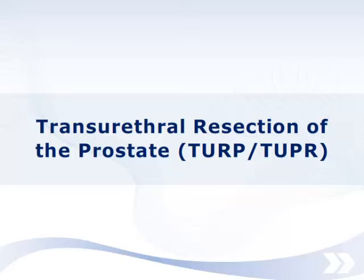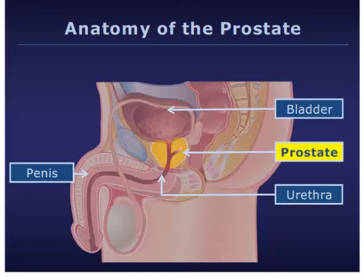Thank you for viewing this educational presentation. This module discusses an operation for the prostate called transurethral resection of the prostate, or TURP. The prostate is a small gland situated at the bottom of the urinary bladder, the place where urine is stored. It surrounds a portion of the urethra, the tube that carries urine from the bladder out through the penis.